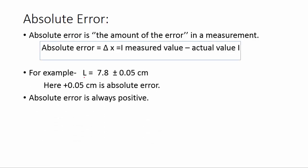For example, L = 7.8 ± 0.05 cm. Here 0.05 cm is absolute error and it's always positive.